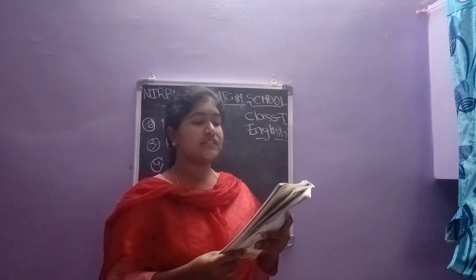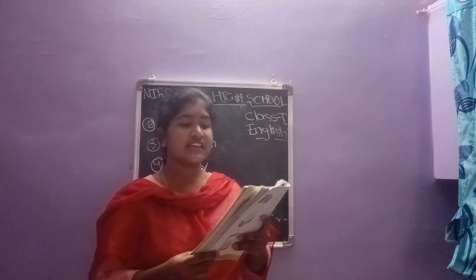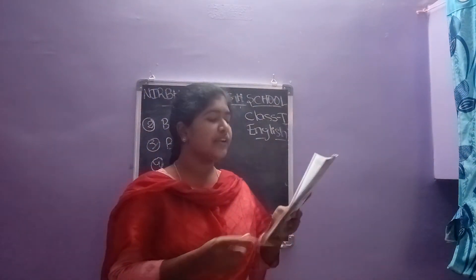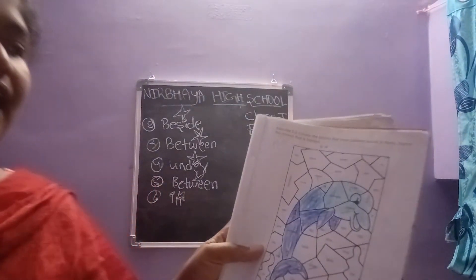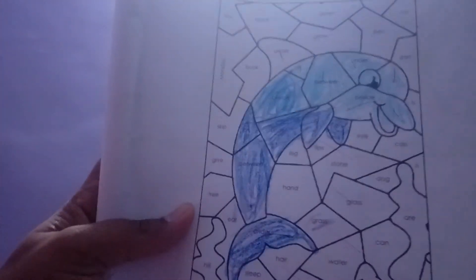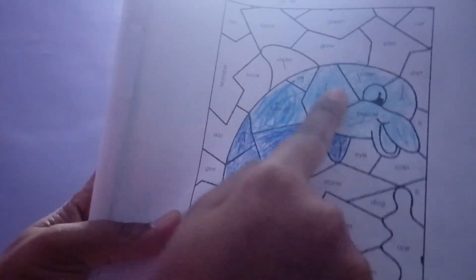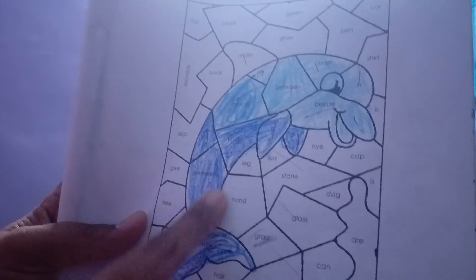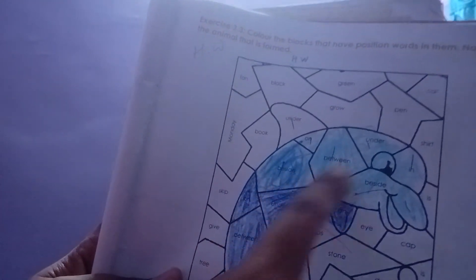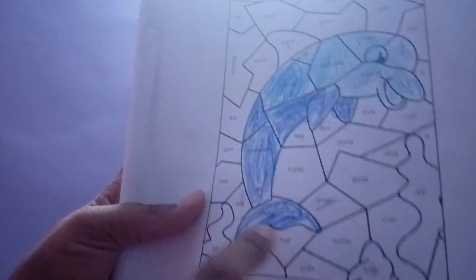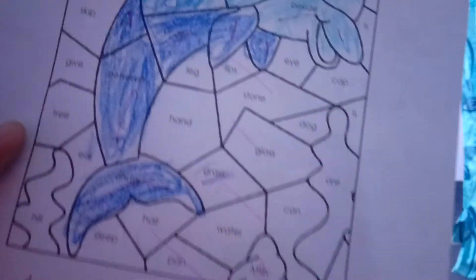Next one: color the blocks that have position words in them, and name the animal that is formed. Here you see, children — you have to color the blocks with position words. For example, 'under' — color this one. 'Between' — color this one. After finishing your coloring, write the animal name that is found.